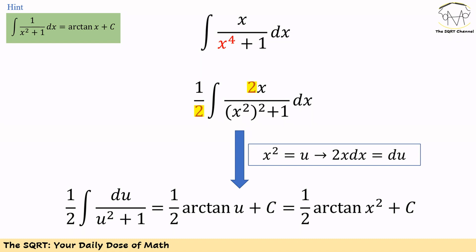Now let's replace x squared with a new variable u. If we get the derivative from both sides, we will have 2x dx equal to du. If we replace this, the integral is going to be 1 over 2 times the integral of du over u squared plus 1. Using the hint that the integral of 1 over x squared plus 1 dx equals arctan of x plus c, the integral becomes 1 over 2 arctan of u plus c. Replacing u with x squared, the final answer is 1 over 2 arctan of x squared plus c.